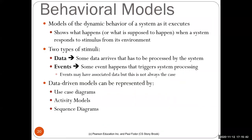Behavioral models model the dynamic behavior of a system when it executes — they show what happens when a system responds to stimuli from the environment. There are two types of stimuli: data, processed by calling methods which call other methods (represented in sequence diagrams), and events, which trigger system processing and are better represented in state diagrams showing states and the events that cause transitions. Data-driven models are represented by use case diagrams, activity models, and sequence diagrams.